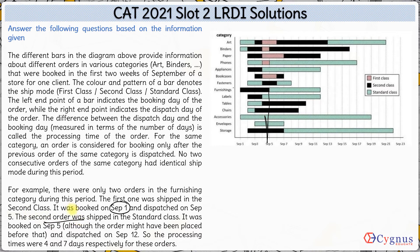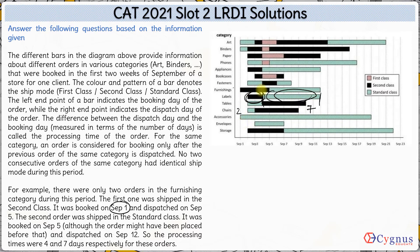As soon as the first order was dispatched, the second order was booked on September 5 in standard class and dispatched on September 12. So from September 5 till September 12, the total processing time for the second order was 12 minus 5 = 7 days. Similarly, the processing time for the first order was 1, 2, 3, 4 days — so for furnishing, the first order's processing time was 4 days.